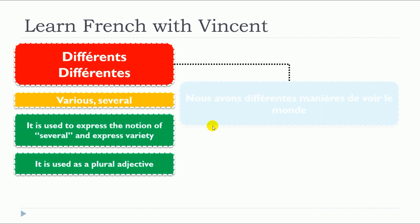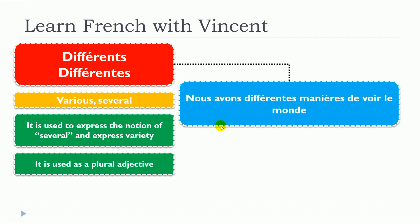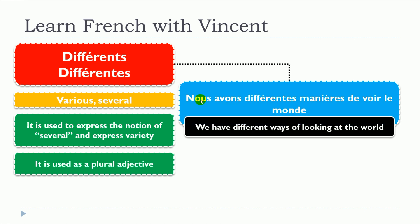Let's see two more examples. Nous avons différentes manières de voir le monde. In that situation, manières is feminine plural, so we use différentes, the feminine plural form of the adjective.